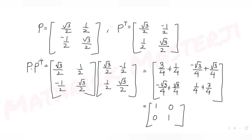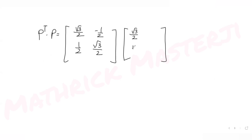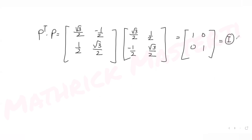So P·Pᵀ gives us the identity matrix [1,0; 0,1]. Similarly, computing Pᵀ·P also gives the identity matrix [1,0; 0,1]. So both P·Pᵀ = I and Pᵀ·P = I.